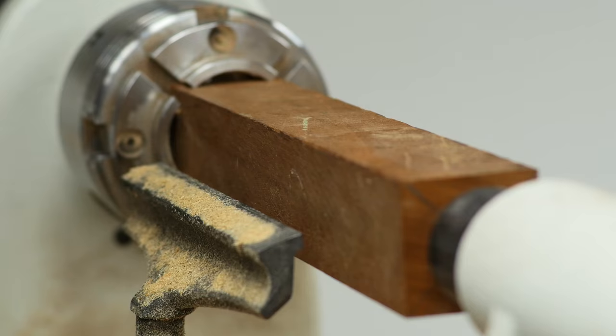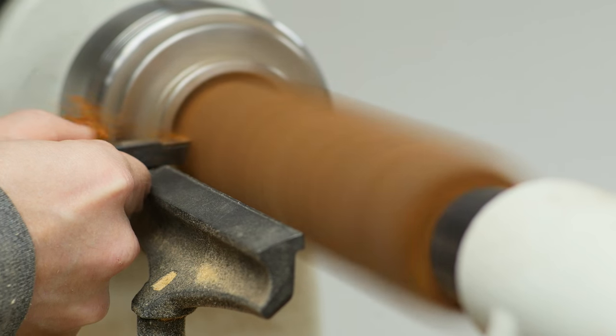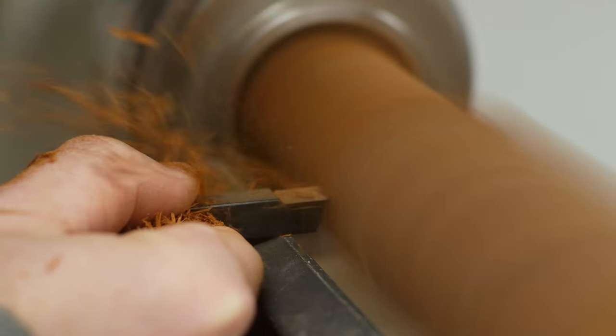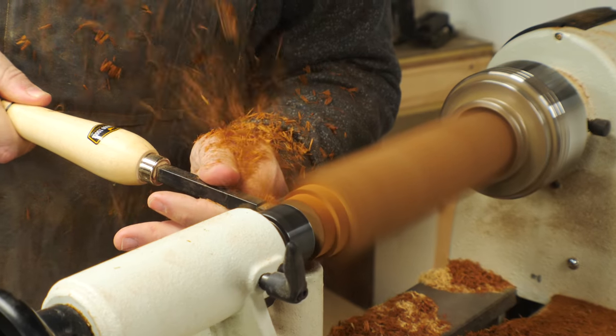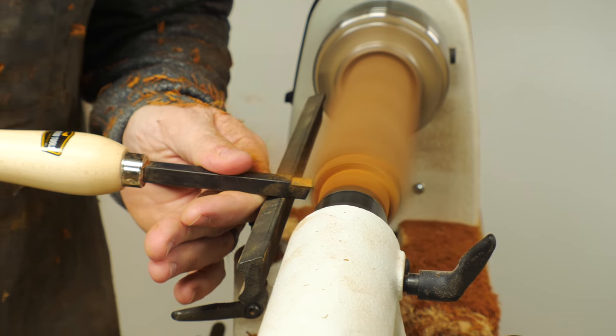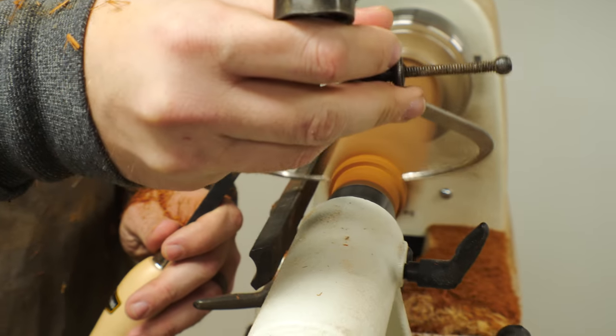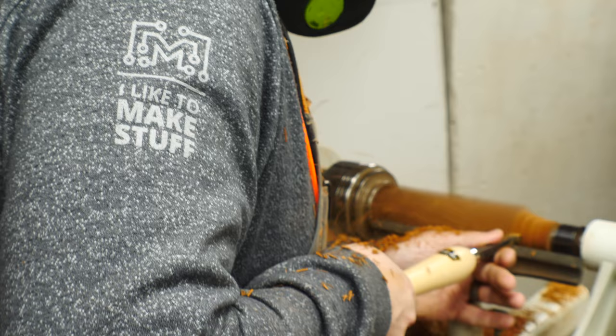I put these in the lathe and started turning them down into cylinders. I wasn't really sure how big to make these, I just needed to make them comfortable to hold. After some trial and error, I picked a size that I thought would be comfortable and set the calipers to that size. I used that to measure the piece as I turned them down.